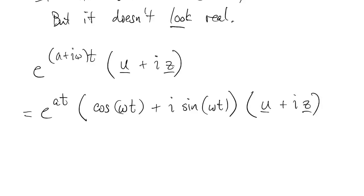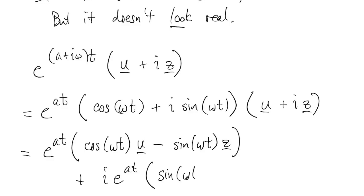So we get two terms that are real. We get the product of the cosine with u. And we get the product of the sine with z times i squared, so that becomes negative one. And then we get two imaginary terms. We get the sine times u, and the cosine times z.